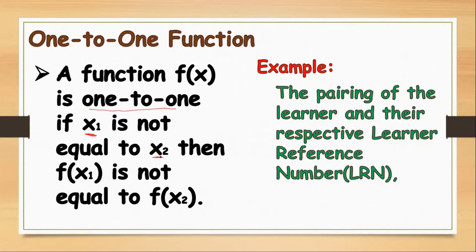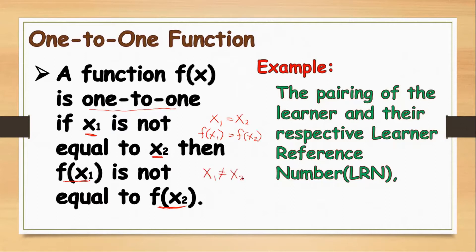And so the range or the output of the function will also not be equal. The converse of this statement is: if x₁ is equal to x₂, then f(x₁) will also equal f(x₂). This is the converse of the statement that if x₁ is not equal to x₂, then f(x₁) must not equal f(x₂). Then we can say that the functions are one-to-one functions.